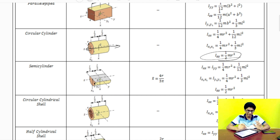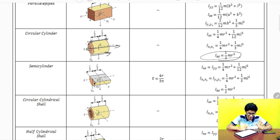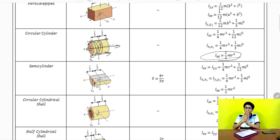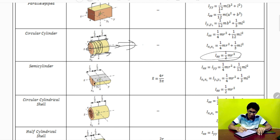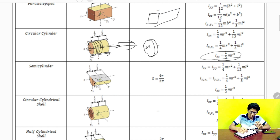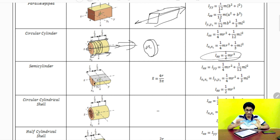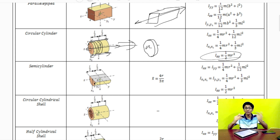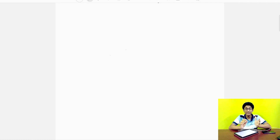One trick: suppose your body is extended along an axis and is completely symmetrical — each layer along the axis is the same. Then you can compress the body along that axis. For example, a cylinder can be treated as a disc for moment of inertia purposes. This gives you an advantage in visualizing and remembering the formulae. So here are the formulae you absolutely need to keep in mind for rotational mechanics questions.